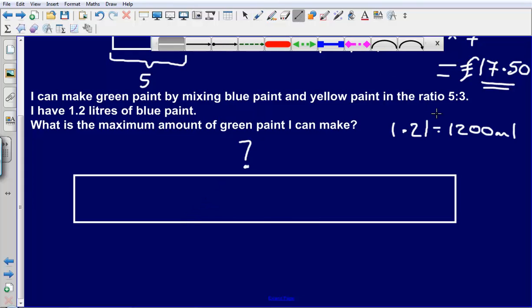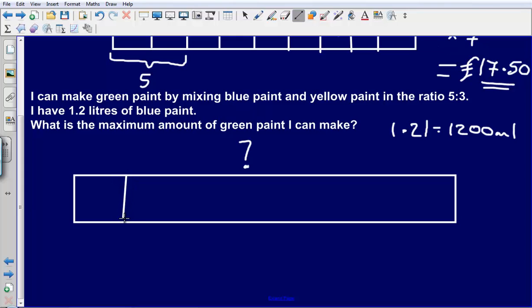But we do know that it is split into the ratio of five parts to three parts, so it needs to be split into eight separate parts. So let's do that: 1, 2, 3, 4, 5, 6, 7, 8.